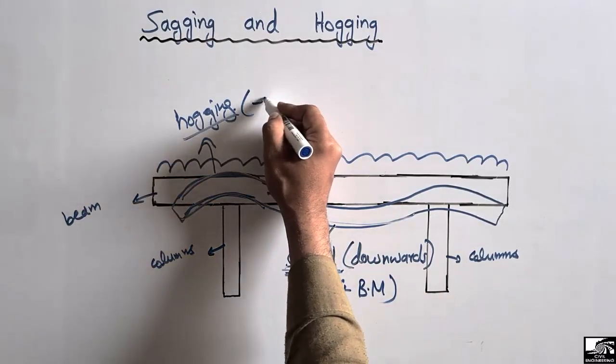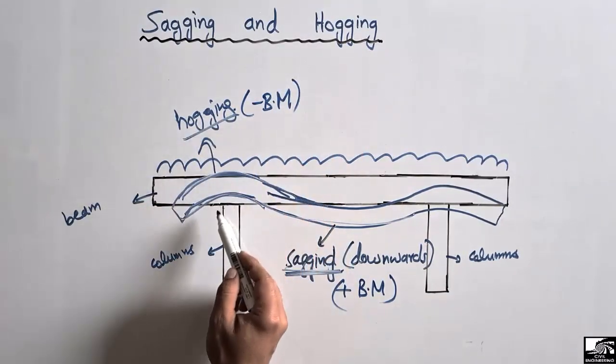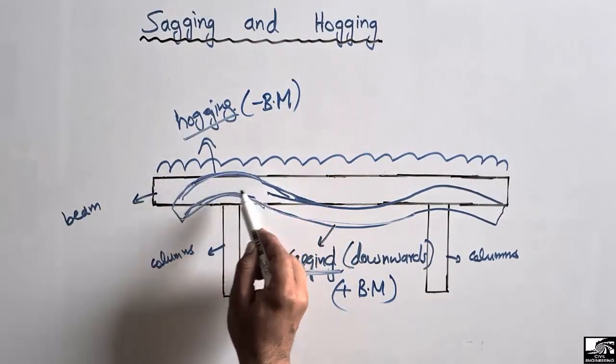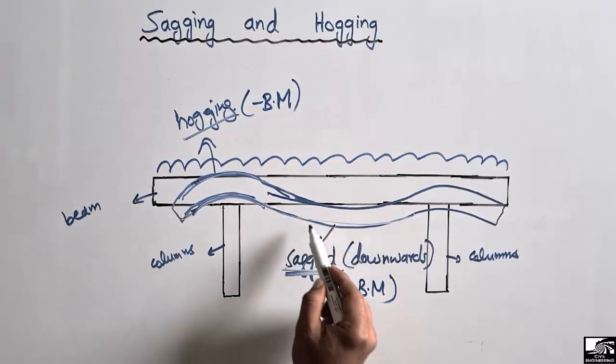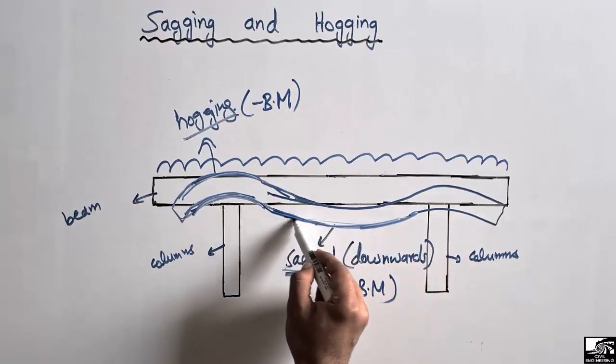When it shows negative bending moment, it will be hogging of the beam, because negative bending moment always has an upward direction of bending, while positive bending moment means that the beam will always bend in the downward direction.